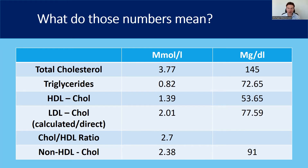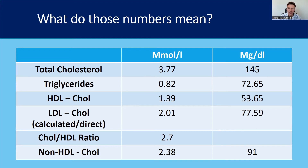HDL cholesterol is the total amount of cholesterol found within the high density lipoprotein particles. Similarly, LDL cholesterol is the total amount of cholesterol found within the LDL particles. Interestingly, the LDL value is often just calculated and not directly measured. There's an equation called the Friedwald equation, which calculates LDL based on the HDL, total cholesterol, and triglyceride levels. So you can often have a spurious LDL cholesterol number if your triglyceride level is high. You should always push your doctor to do a direct LDL measurement, which means the cholesterol has been directly measured within the LDL particles.